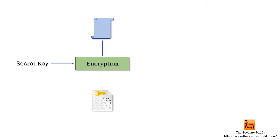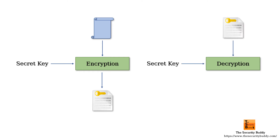When we use a good encryption algorithm and a strong secret key, the cipher text is so much different from the plain text that it becomes computationally infeasible to convert the cipher text back to the plain text without knowing the secret key.